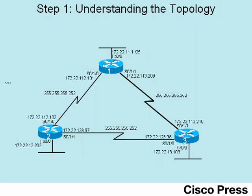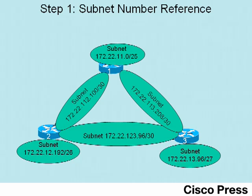Slash 25 on the top LAN, slash 26 on the bottom left LAN off router 2, and then a slash 27 mask off of router 3. For reference, the screen now shows the subnet numbers of the six subnets used in this topology. For the rest of the lab, it may be handy to have either your soft copy or hard copy booklet that comes with this video product, so you don't have to keep doing the subnetting math in your head.